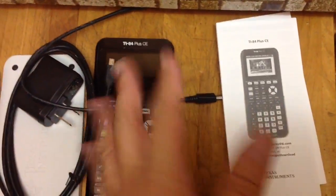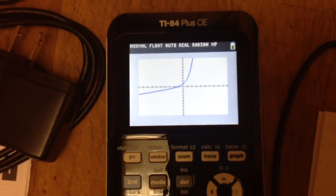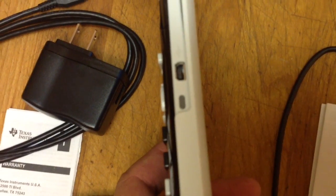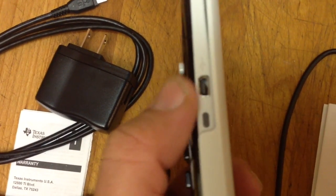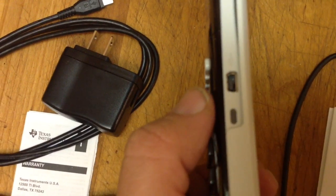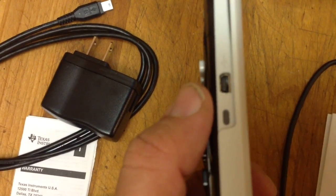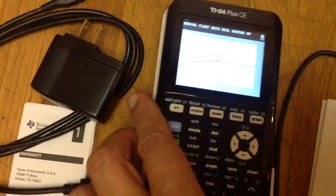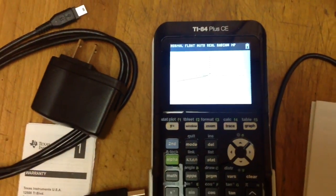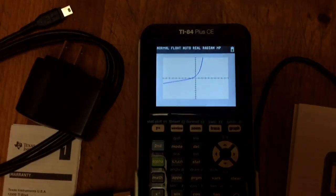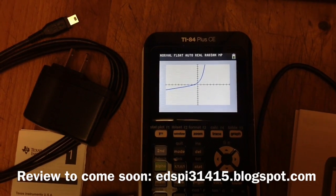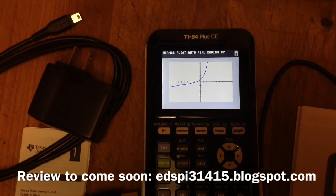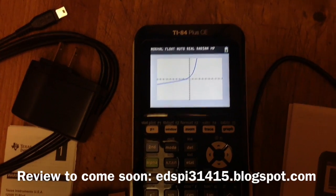So that's what came in the package. That's your preview of the TI-84 Plus CE. This is the USB port. Instead of all the connections being at the top and bottom, the CE puts them to the right of the calculator. I'm going to have a full review of this calculator on my blog, which is edspi31415.blogspot.com. Thank you very much, and have a great day.